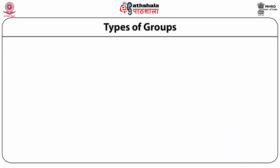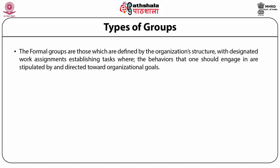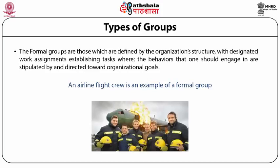Formal groups are defined by the organization structure, which has predetermined designated work assignments allotted to the members, clearly established tasks to be performed by different members, and behaviors they are supposed to engage in — all stipulated by and directed towards organizational goals. For example, an airline flight crew is an example of a formal group.